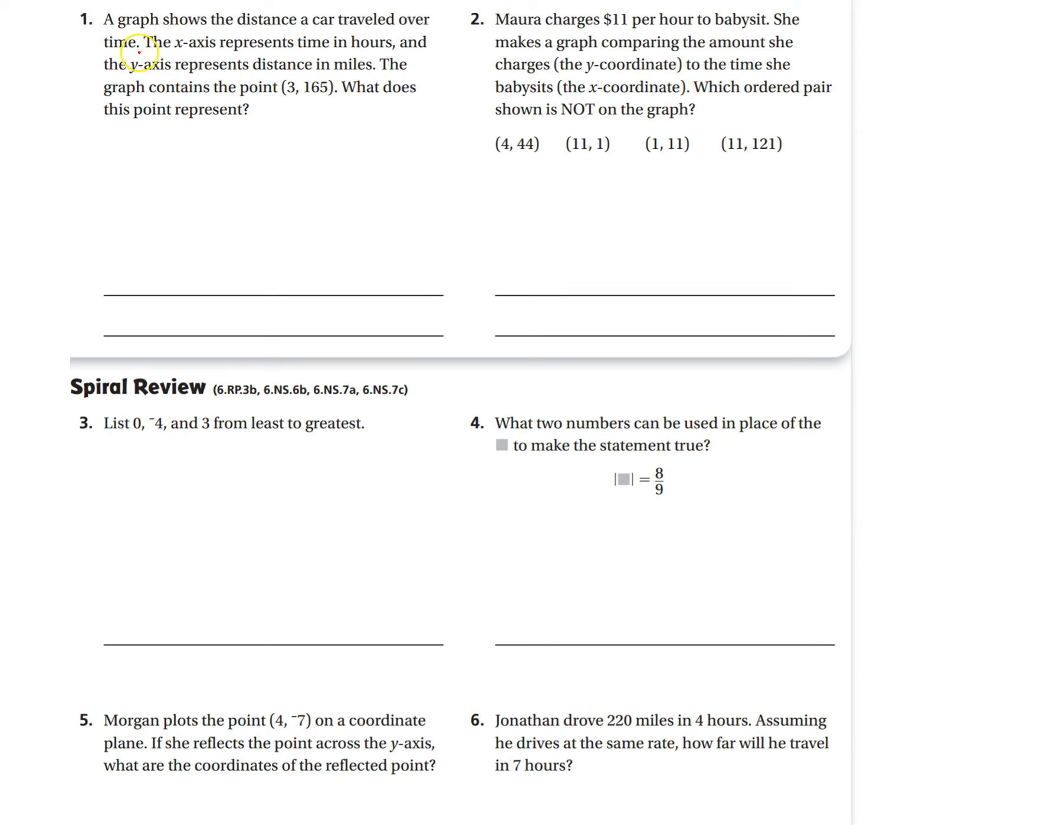A graph shows the distance of a car traveled over time. The x-axis represents the time in hours, and the y-axis represents the distance in miles. The graph contains the point (3, 165). What does this point represent?